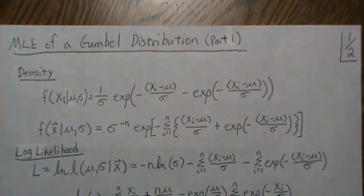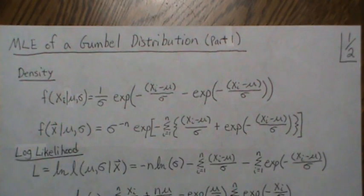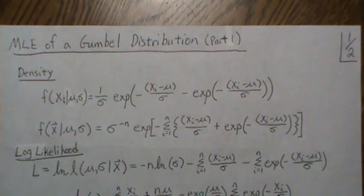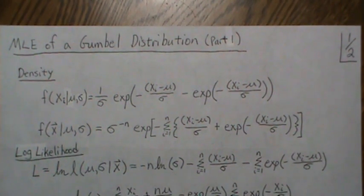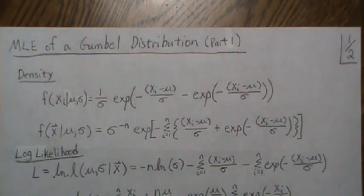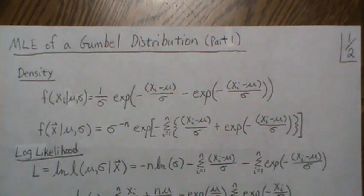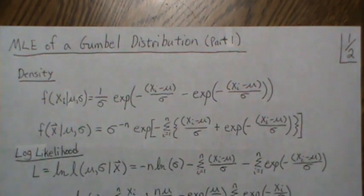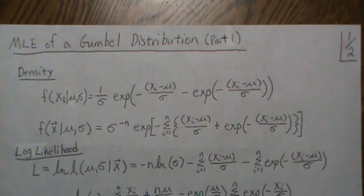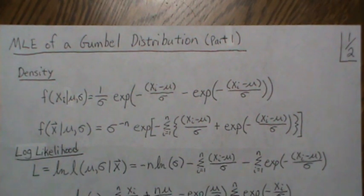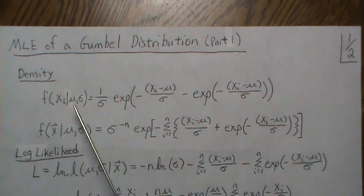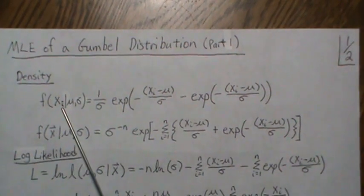In this video we find the maximum likelihood estimators for the two parameters in a Gumbel distribution. This is part one; in part two we'll illustrate the methods derived here by coding them in R and comparing the results with the built-in function uniroot. In part two we're going to derive the maximum likelihood estimators first.